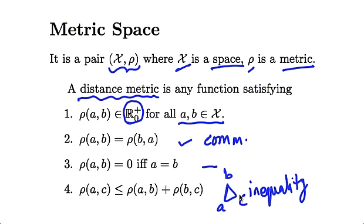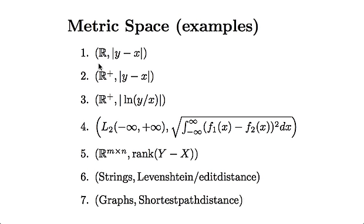Okay. So the space of all real valued numbers, just the space of reals associated with the distance, mod y minus x. This is the absolute value of, like 5 minus 3 if x and y were 5 and 3. So that is a metric space. Now I can change the space and keep the distance the same. So now the space is R+, which is the space of positive reals. And the distance metric is still the same. So this is a different metric space because the space is itself different.